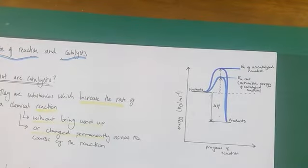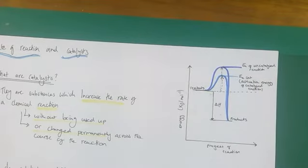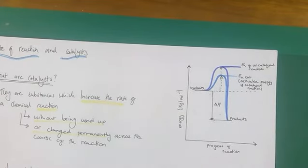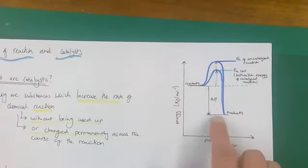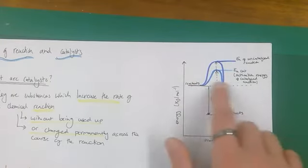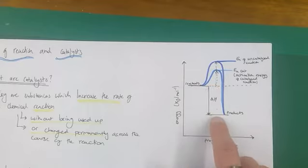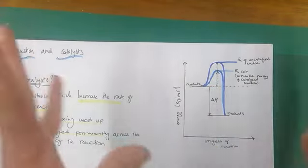You can visualize this using an energy profile diagram. It looks a bit like this and we'll talk about this more in energetics. If you want to know more about energy profile diagrams, look at those revision videos. Here we have reactants to products, a reaction taking place. This is an exothermic reaction because heat energy is being given out to surroundings.